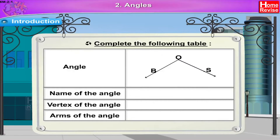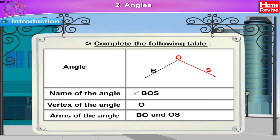Angle 3: Name of the angle is angle BOS. Vertex of the angle is O. Arms of the angle are BO and OS.